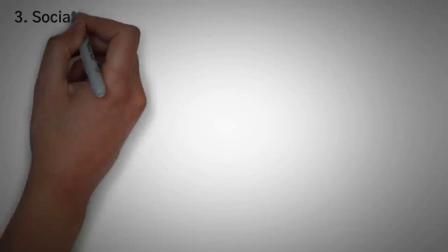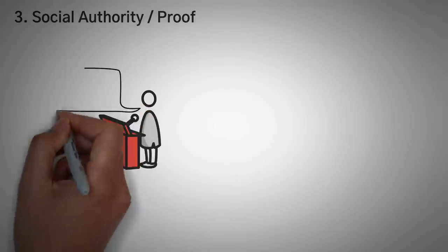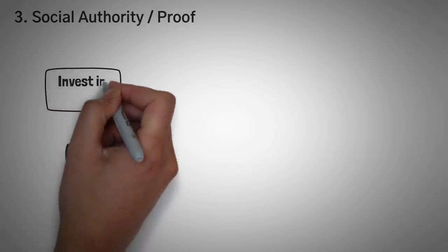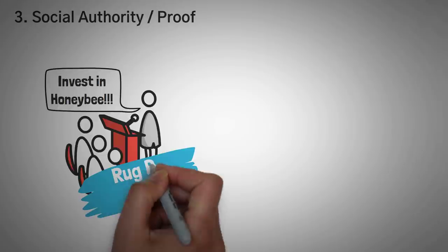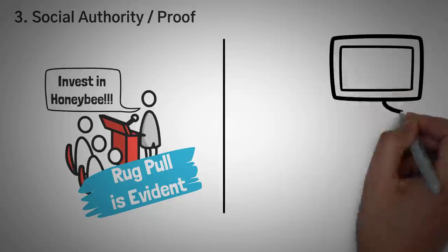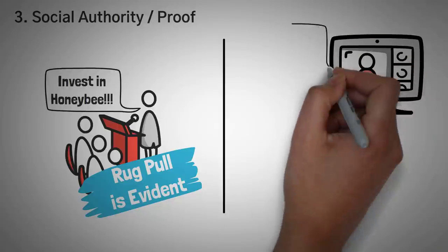Number three: Social Authority or Social Proof. Remember how your favorite influencer told you that Honey Bee or Cummies was the next big project, and that if you bought some they would match it? Well, this is another big sign that a rug pull is evident if you notice large influencers promoting projects that they have no part in. Good projects will advertise themselves.